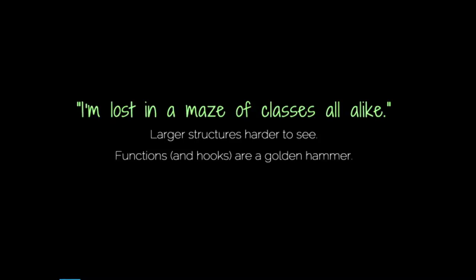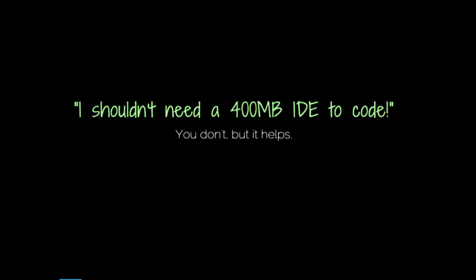Functions and hooks are kind of a golden hammer — everything looks like a nail, everything's a function. If we only have that one construct, we'll use it for everything, even in places where it doesn't have key advantages. You might have heard the complaint that you shouldn't need a 400-megabyte IDE to code stuff. Well, you don't need that for a lot of object-oriented programming, but it helps. There are a lot of bad IDEs out there, and object-oriented programming languages have had really terrible IDEs written for them — I'm looking at you, IBM Rational. There are better IDEs today that are lighter, more nimble, and help you a lot more.